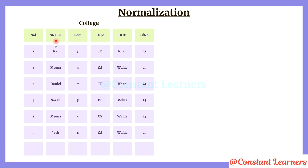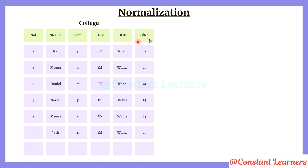Now on the screen we have a table from the college database. In this table, we have the student ID, student name, semester — that is which semester the student is studying in — the department in which the student is in, the head of that department, and the classroom number, that is which classroom that student is sitting in.